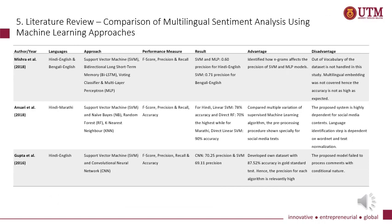In the next slide, comparisons of multilingual sentiment analysis using machine learning approaches are presented. From Mishra et al. using Hindi-English and Bengali-English, the approaches were Support Vector Machine, Bi-directional Long Short-Term Memory, Voting Classifier, and Multi-Layer Perceptron, with performance measured by F-score, precision, and recall. Results showed SVM and MLP had 0.6 precision for Hindi-English, while SVM had 0.7 precision for Bengali-English. The advantage was identifying how n-grams affect the precision of SVM and MLP models. The disadvantage was that out-of-vocabulary items were not handled, and multilingual embedding was not covered, hence accuracy was not as high as expected.